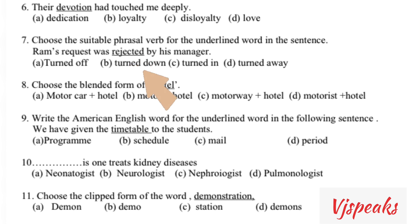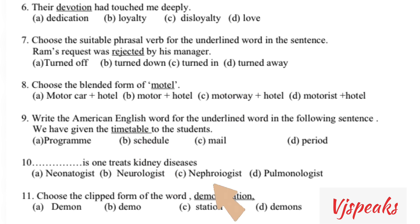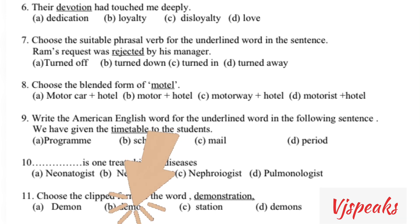Rejected means turned down — so option B. Motel is a blend of motorway plus hotel. Timetable is called schedule in American English. One who treats kidney diseases — kidney refers to nephron, so the answer is nephrologist. The last question is demonstration — the short form is demo.